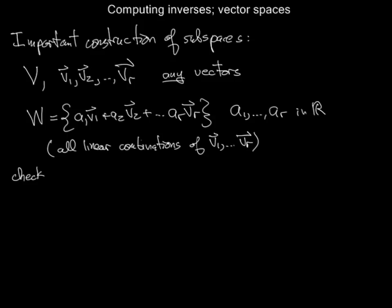This is a subspace. So why is this a subspace? Well, if you take one of these vectors, which is a linear combination, and take another one, which is a different linear combination with coefficients Bi, what happens if you add them?